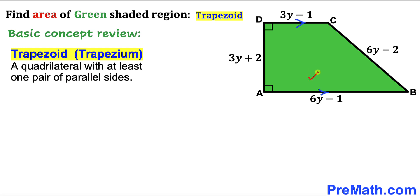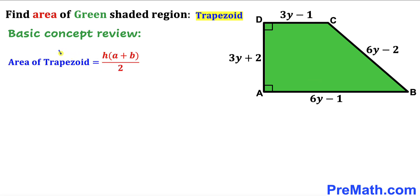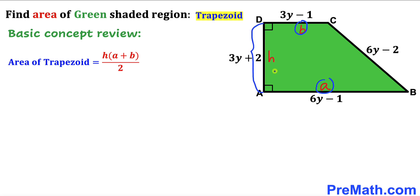As you can see in this diagram, side AB is parallel to side CD. The area of a trapezoid formula is: Area equals height H times (A plus B) all over 2, where A and B are the two parallel bases and H is the height. Our task is to find lowercase a, lowercase b, and height H.